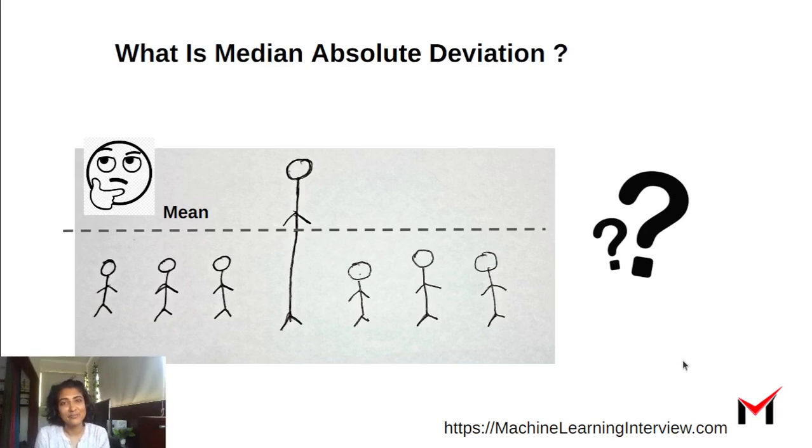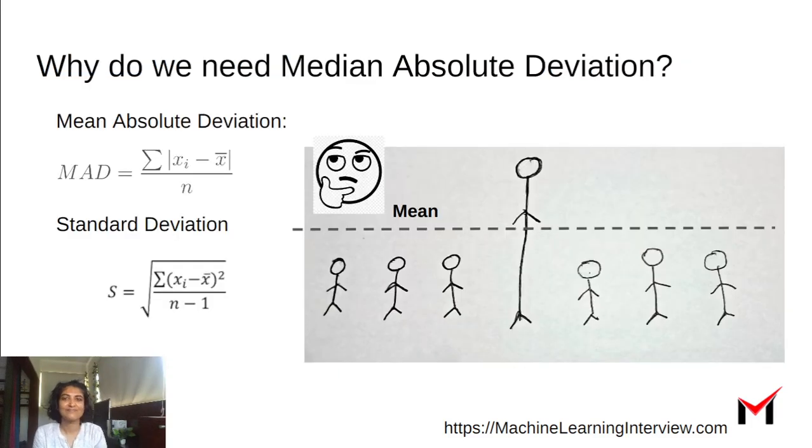What is the median absolute deviation and why do we care about it? Let's see. We commonly use the mean absolute deviation or the standard deviation, and these typically have the problem that they are impacted by outliers.